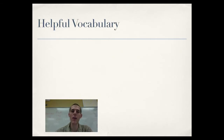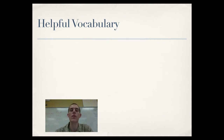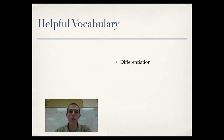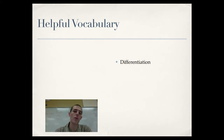First thing to talk about is some helpful vocabulary. There are some words that are used differently in this lesson than would normally be used in other lessons, so I just want to give you a baseline. The first one is differentiation. For today's topic, when we are talking about differentiation, we are talking about cells that are alike becoming different from one another. So if you've got two cells in your initial zygote that are the same, one of them might become a heart cell, one of them might become a brain cell — that is differentiation.